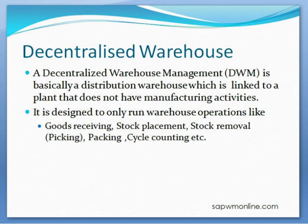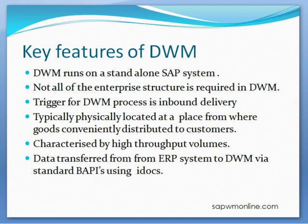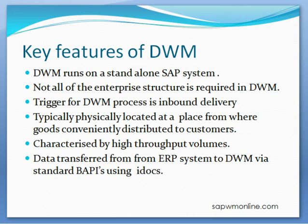All the business processes are carried out in the ERP system, whereas the decentralized warehouse is responsible for goods receipts, stock placement, stock removal, packing, and warehouse operations like cycle counting. Key features include: the decentralized warehouse runs on a standalone system; not all enterprise structure is required in DWM; the trigger for DWM process is the inbound delivery; and it is typically implemented for distribution center scenarios located near the marketplace with high throughput. Data transfer from ERP to DWMS is via IDOCs.